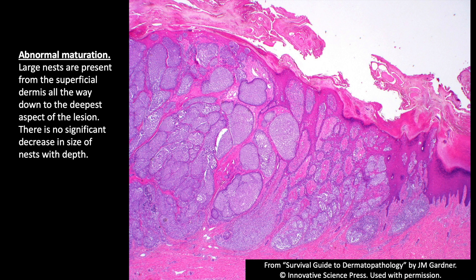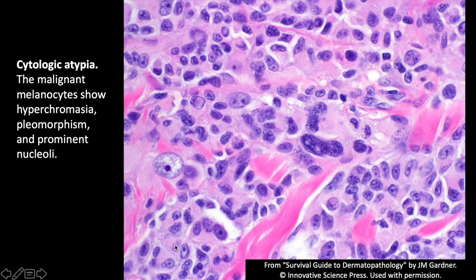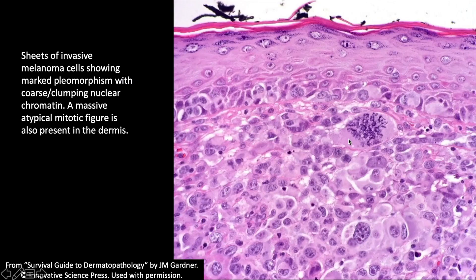Obviously, if we see big, ugly atypical cells we're very concerned for melanoma, or if I see dermal mitoses — particularly large, atypical ones like this. These are all very dramatic examples; in real life it can be a lot more nuanced and subtle. I still struggle with difficult melanocytic lesions basically every day of my practice, even after nine years as a board-certified dermatopathologist. Most dermatopaths would agree — melanocytic lesions can be very challenging.